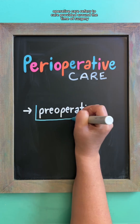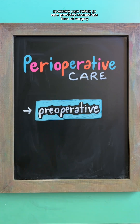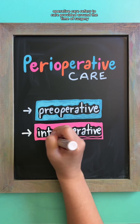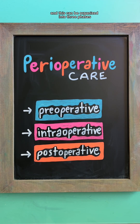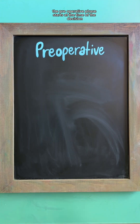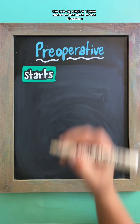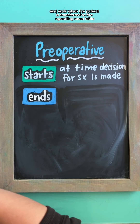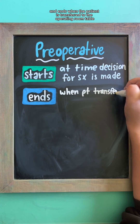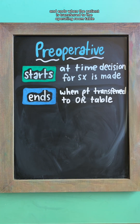Peri-operative care refers to care provided around the time of surgery, and this can be organized into three phases. The pre-operative phase starts at the time the decision for surgical intervention is made and ends when the patient is transferred to the operating room table.